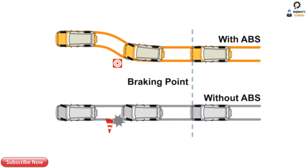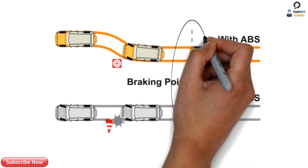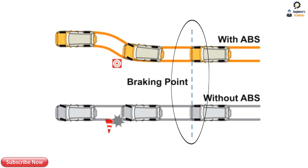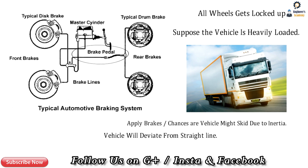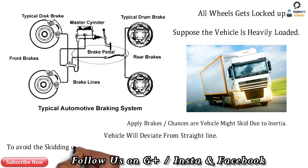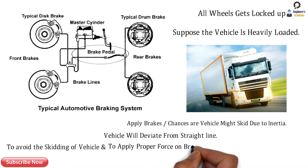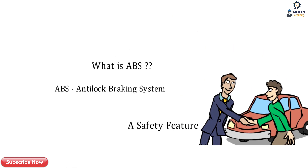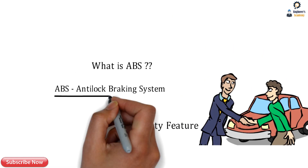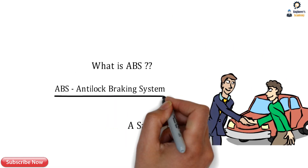Here are two conditions: with ABS and without ABS. The dotted line represents the braking point at which the person applies the brake. Without ABS, there are chances of an accident. With ABS, there is hassle-free driving. To avoid the skidding of the vehicle and to apply the proper braking force, we need the anti-lock braking system.